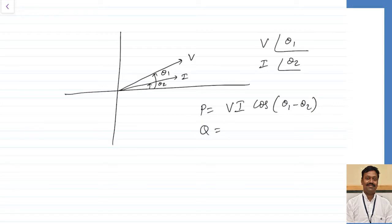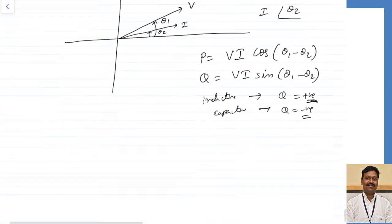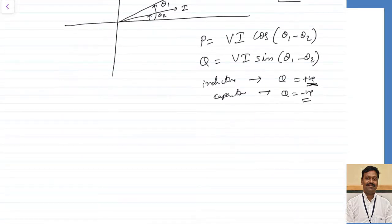For inductive reactance, if the load is inductive, Q should be positive; if it is capacitive, Q should be negative. Since all our practical loads are inductive loads, it is convenient to take Q as positive for inductive loads because the minus sign confusion would otherwise appear every time.